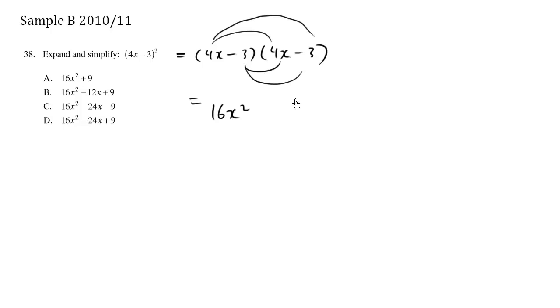Outside here is going to be minus 3 times 4x, which is minus 12x. Inside is going to be minus 3 times 4x, which is minus 12x.